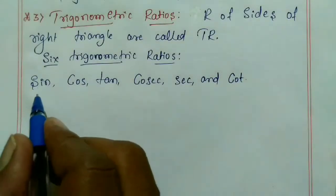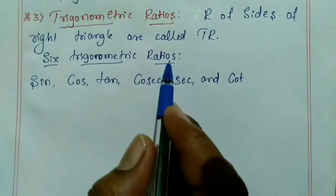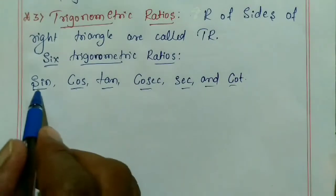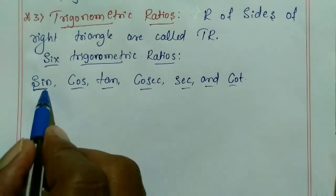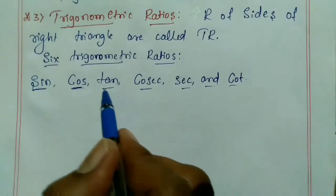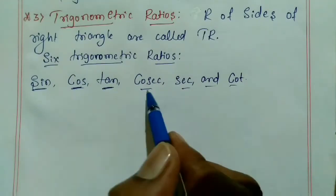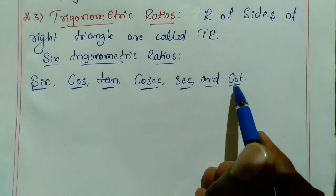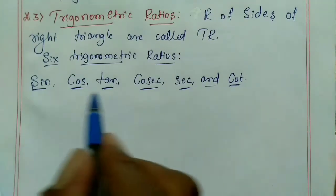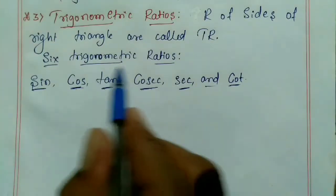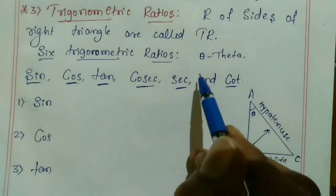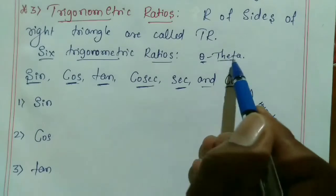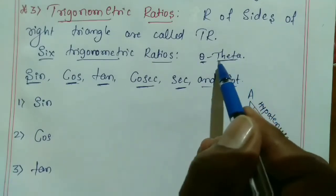Trigonometric ratios means ratios of sides of a right triangle. There are six trigonometric ratios: the first is sine, the second is cos, the third is tan, the fourth is cosecant, the fifth is secant, and the last is cot. The symbol theta (θ) is a Greek symbol meaning angle.